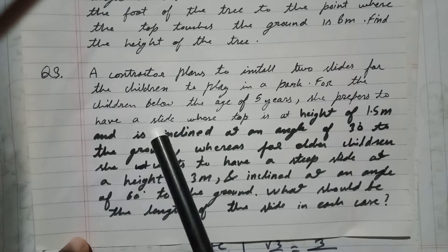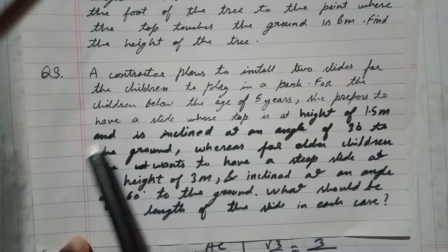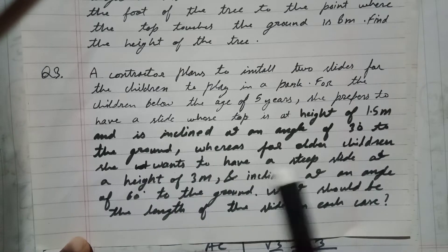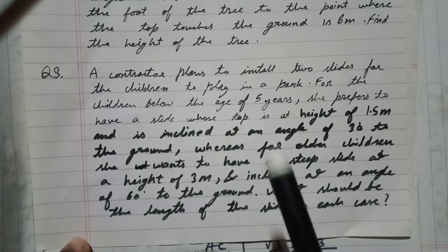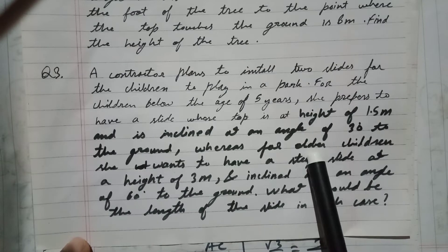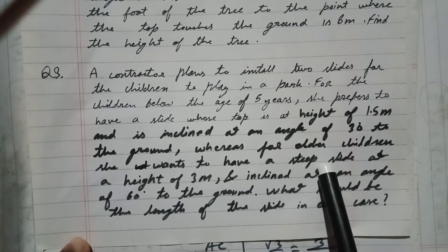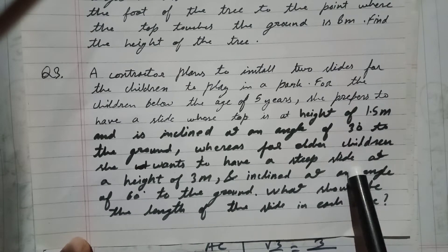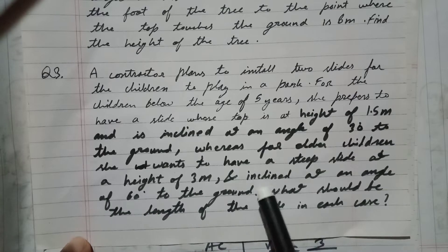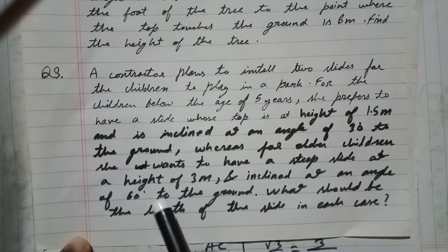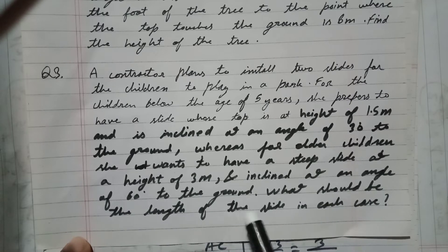The slide is inclined at an angle of 30 degrees to the ground. Whereas for elder children, she wants to have a steep slide at a height of 3 meters and inclined at an angle of 60 degrees to the ground.